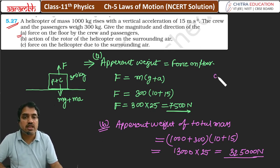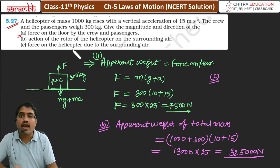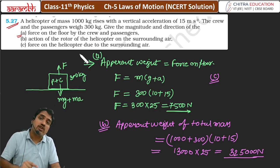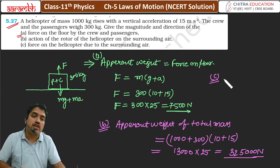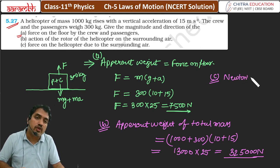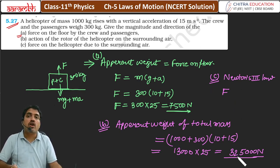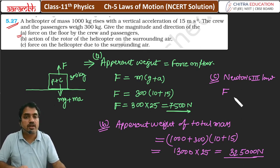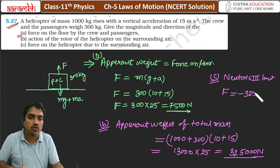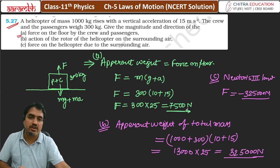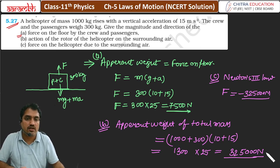Aur usi se related hamara C option hai. C question hai: force on helicopter due to surrounding air. Toh jitna force helicopter surrounding air par lagayega, utna hi force — according to the action-reaction pair, Newton's third law — force on helicopter due to surrounding air is equal to minus 32000 Newton. Yahan par triple zero nahi aayega, double zero hi aayega. Ek zero humne extra le liya, toh yahan double zero aapko likhna hai.